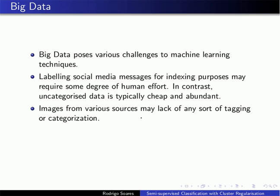The same can be said about the amount of images that are produced every day through cameras, smartphones, and so on. Some of those images can be tagged, some others may not be tagged. So it would be a good idea if you could improve the learning of some algorithm through the use of both categorized images and uncategorized images.